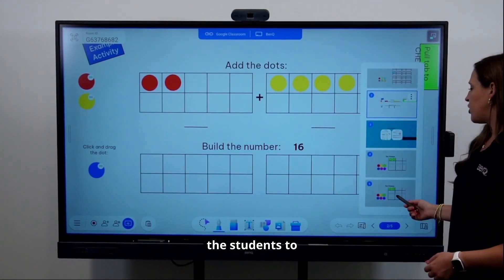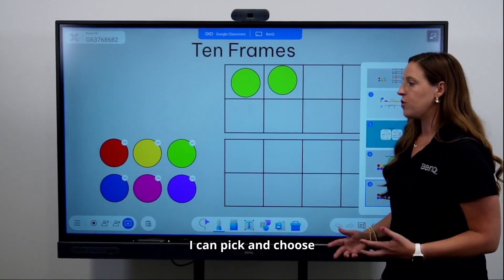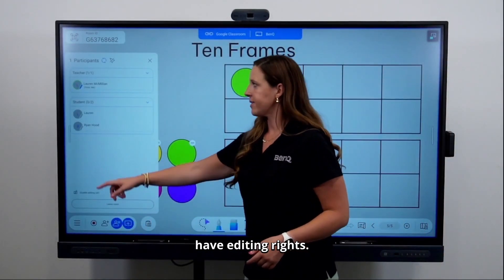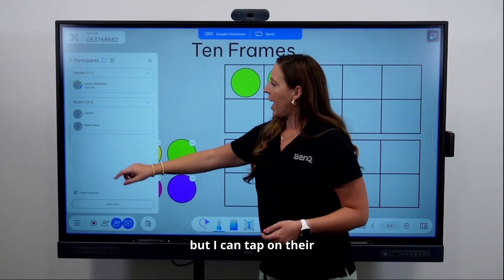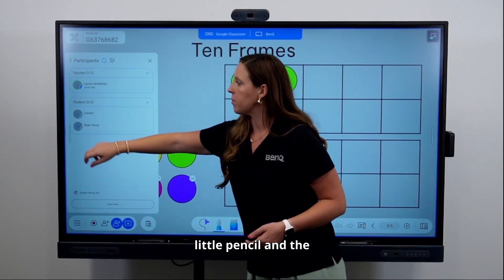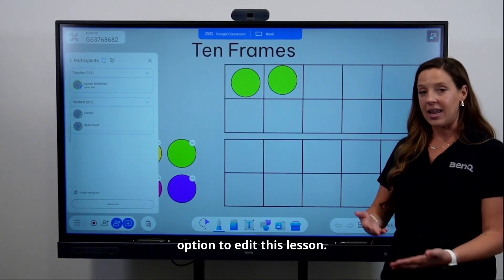Sometimes you have students that have to sit in the back of the room or off to the side and they can't see very well. You're now able to take your lesson from the front of the room and push it directly to their device. But maybe you want the students to collaborate with you. I can pick and choose who I want to have editing rights. I can tap on their little pencil and the pencil will turn blue, and now they have the option to edit this lesson.